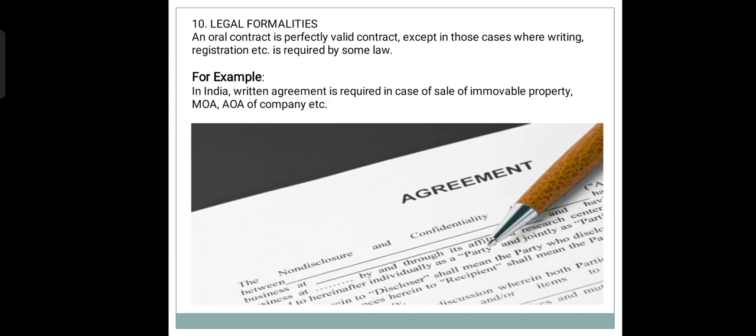Thus, in order to make a valid contract, one needs to fulfil all of the essential elements mentioned under Section 10 of Indian Contract Act 1872. Otherwise, the contract will not be considered valid in the eyes of law and hence cannot be enforced at law. Thank you, everyone.